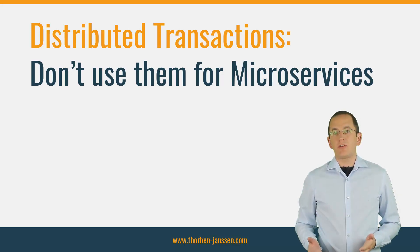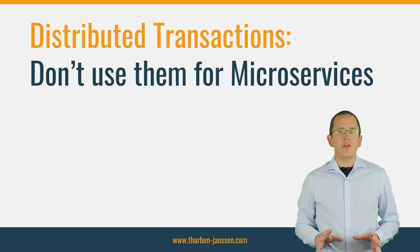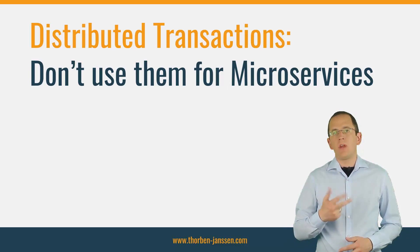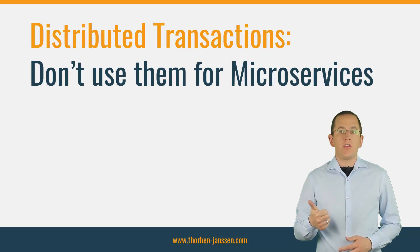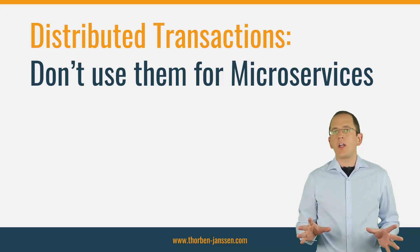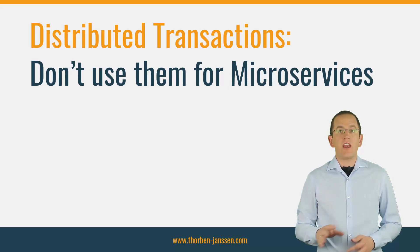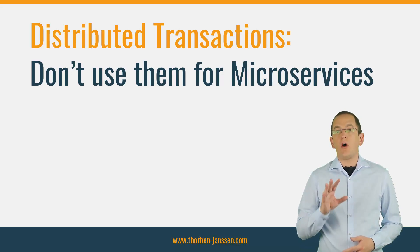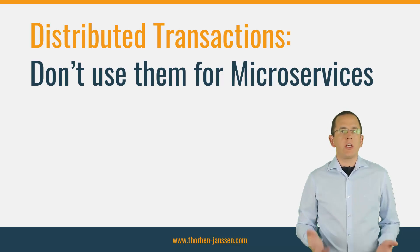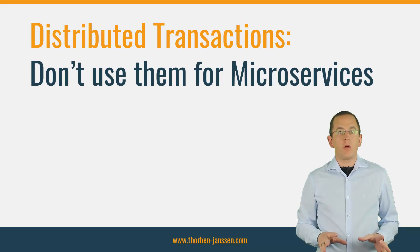Since I started talking about microservices and the challenges of exchanging data between services, I hear three things. First, you only need to model the scope of your services the right way to avoid these problems. Second, we use multiple local transactions and everything works fine — it's really not that big of a deal. And third, we have always used distributed transactions to ensure data consistency and will keep doing that for our microservice architecture. None of these is a good answer and will cause lots of problems in production.